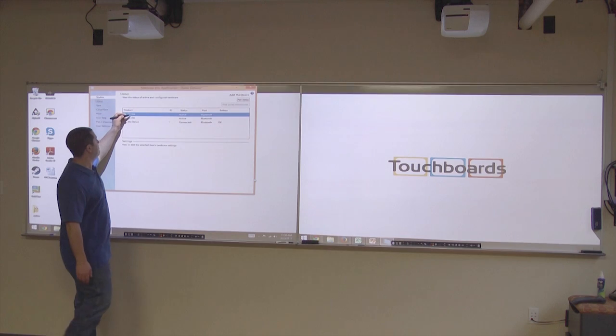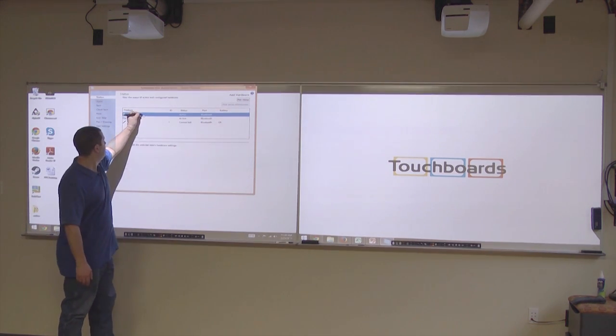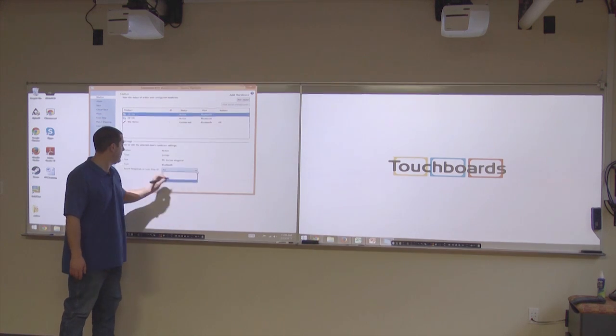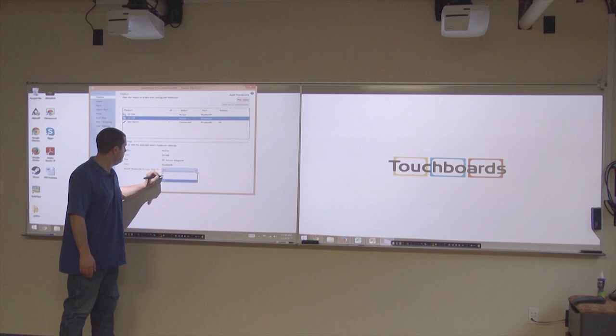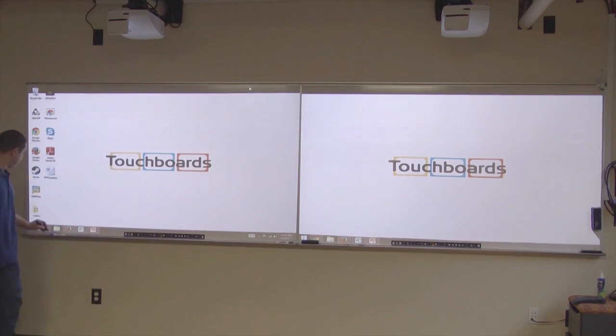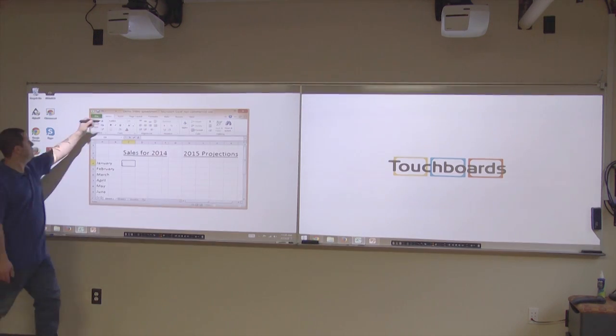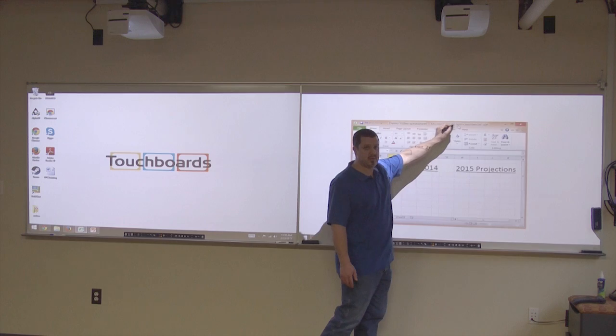So you have board A and board B. This is A. That side's B. We're just going to set them to work off of their own icon strips. Set A to A and B to B. And I can still open windows and move them across the screen. None of that's changed. I still have full control over everything.